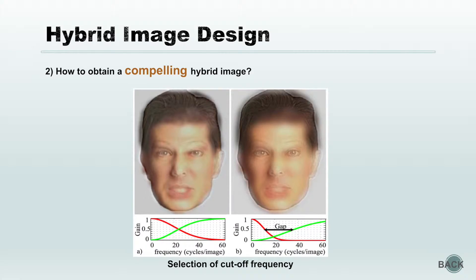In the left image, the two filters have strong overlap, so there is not a clear alternation between two interpretations — a bad hybrid image. By contrast, in the right image, the two filters have little overlap, and the result shows a clear interpretation alternation, which can be considered a good hybrid image.